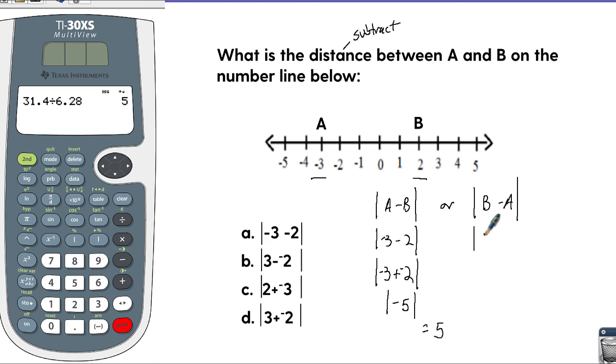It could also be B, which is 2, minus A, which is negative 3. Again, treat subtraction as adding the opposite, so that's 2 plus a positive 3, which is 5.